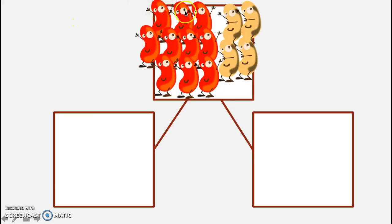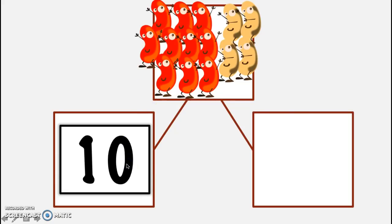1, 2, 3, 4, 5, 6, 7, 8, 9, 10. So if 10 of our beans are red, I can go ahead and put 10 as a part, right? Because of all the beans, 10 are red.